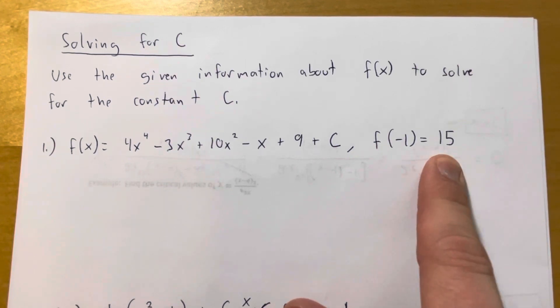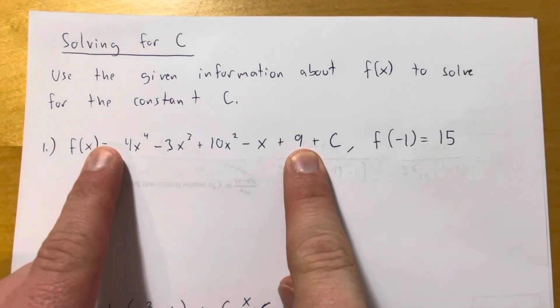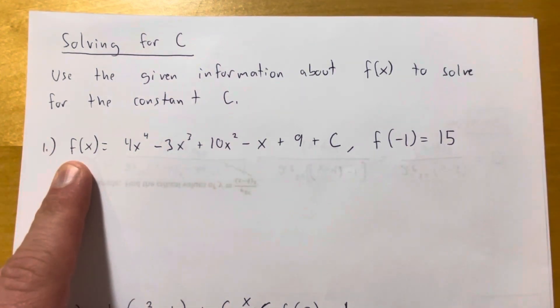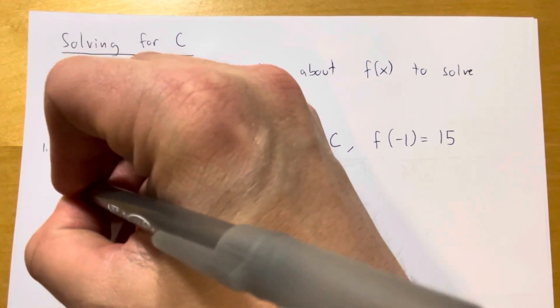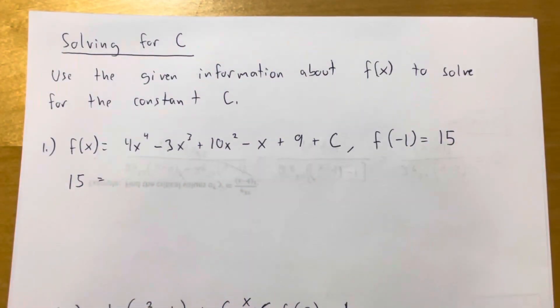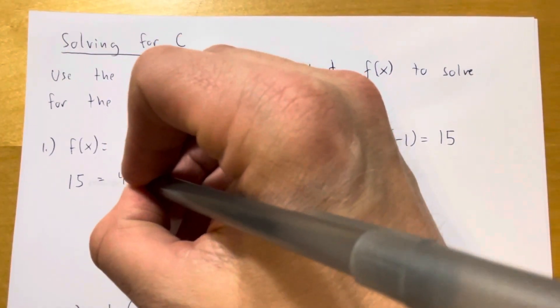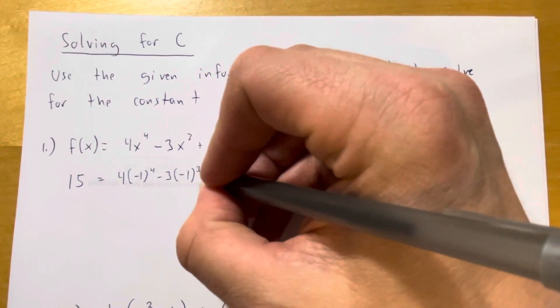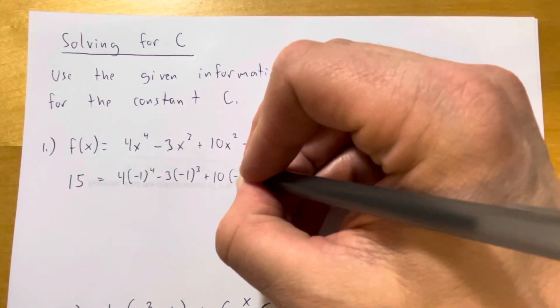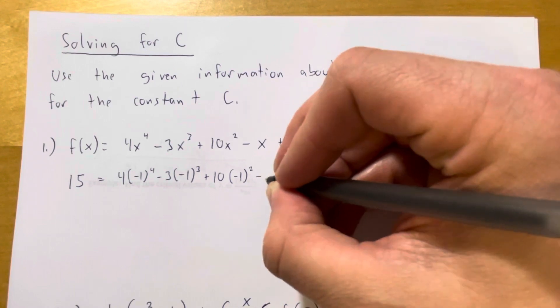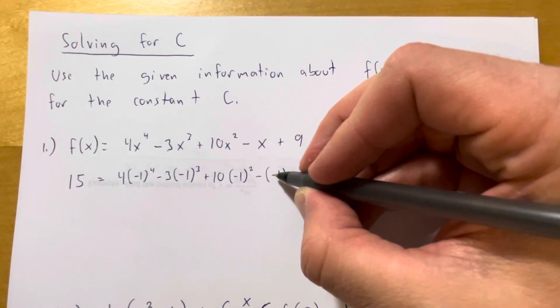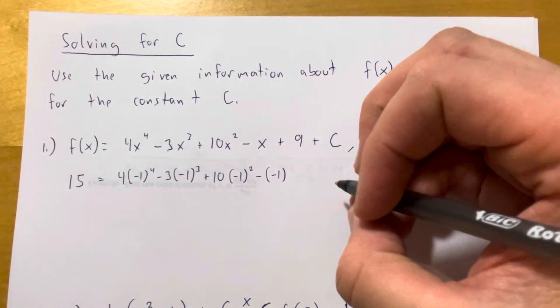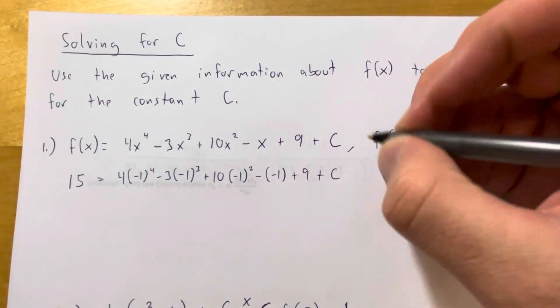If f of negative 1 equals 15, that means I can plug negative 1 into this function and set it equal to 15. So I'm going to set this side equal to 15. And on the right-hand side, I'm going to show that I'm plugging negative 1 into all of the x's here. So 4 times negative 1 to the fourth minus 3 times negative 1 cubed plus 10 times negative 1 squared minus negative 1. Put parentheses around that one so the minus signs aren't like minus minus. Plus 9, and then nothing has happened to the C.